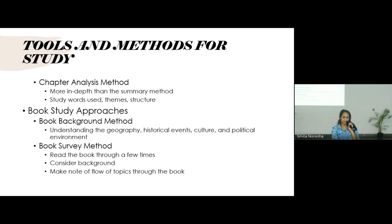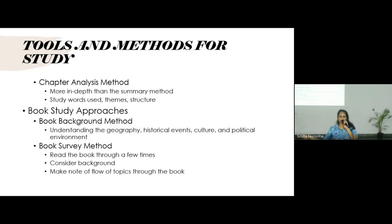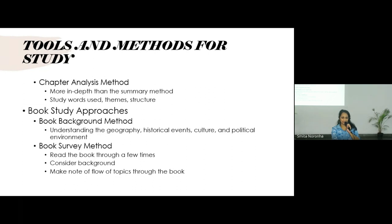The book survey method is similar to the chapter summary method — you read the whole book a few times and create a summary. How does the book flow from one theme to the next, how does the writer address different topics, and what is the overall message? There will be one main theme throughout the book, but within that larger theme there are many sub-themes, and we see how they all relate to the overall message.